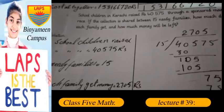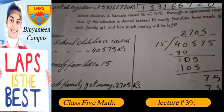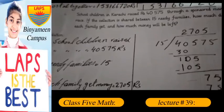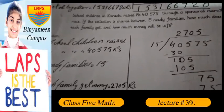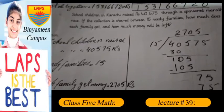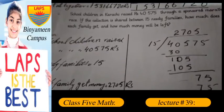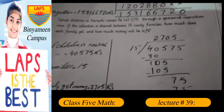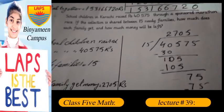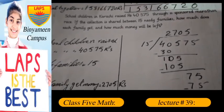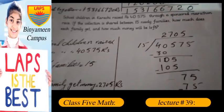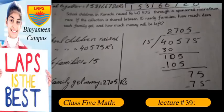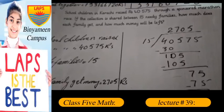Assalamu alaikum, my name is Naim Abbas, I am your math teacher. Today I deliver a lecture on page number 11, second part. School children in Karachi raised rupees 40,575 through a sponsored marathon race. If the collection is shared between 15 needy families, how much does each family get and how much money will be left?